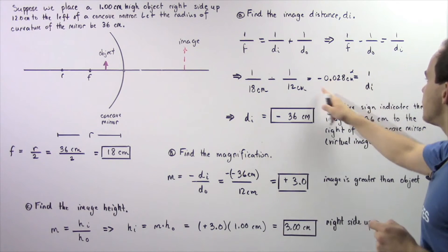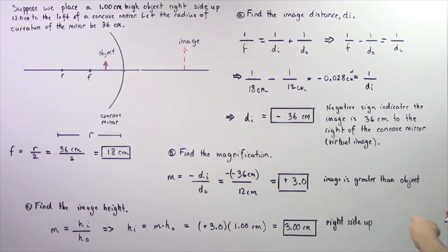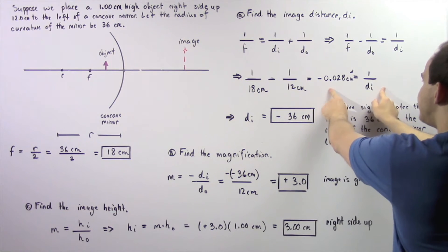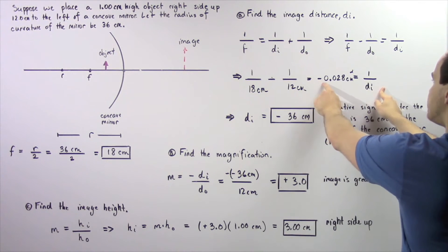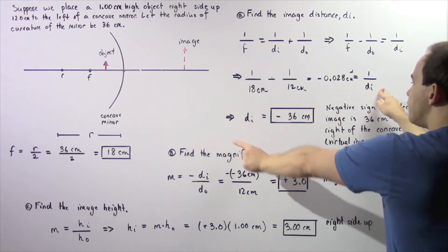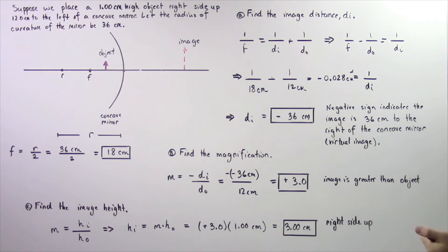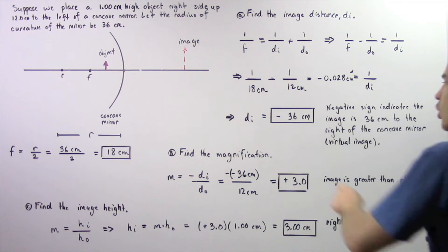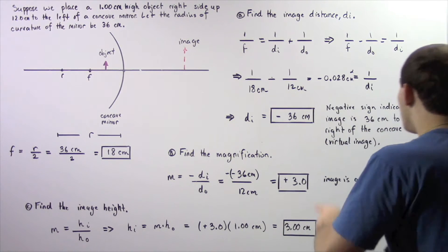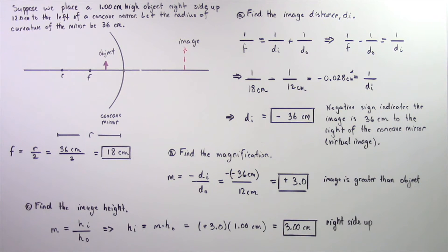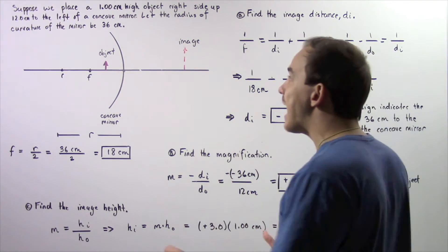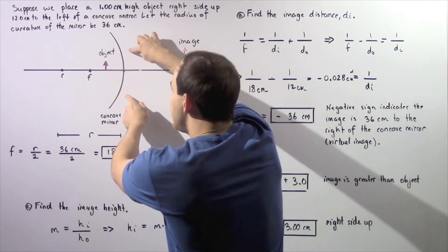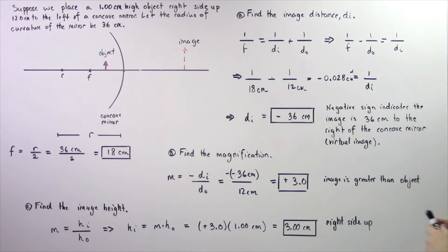That quantity equals 1 divided by DI. Multiplying both sides by DI and dividing both sides by negative 0.028, we get DI equal to approximately negative 36 centimeters. The negative sign indicates that the image is 36 centimeters to the right of our concave mirror. Because the image is behind our mirror, the image is in fact a virtual image.